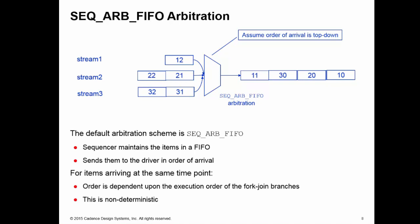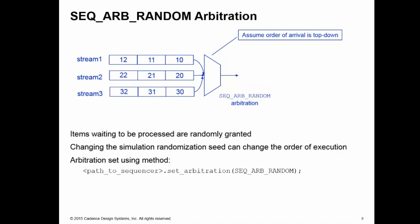The other arbitration mechanism we're going to have a look at in this training byte is the random arbitration method. Now the items waiting to be processed are randomly selected. We work out which items we have, and then we randomly select one of the waiting items and pass it down to the driver. Here I have three items waiting: 10, 20 and 30. We pick one of those, perhaps 20, send that down first. Stream 2 then passes in the next item, 21. I now have again three items: 10, 21 and 30 waiting at the sequencer. The sequencer then randomly selects one of those, 30, and passes it down. We keep on going, randomly selecting one of the items available to pass it down to the driver.